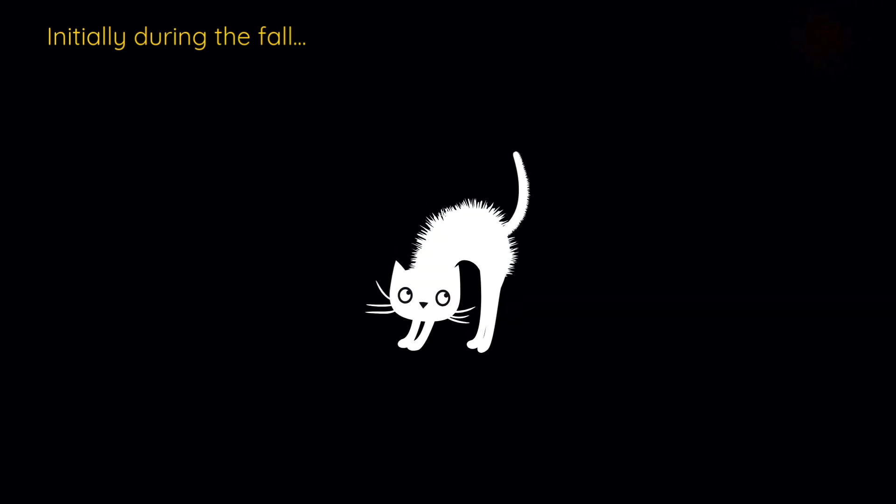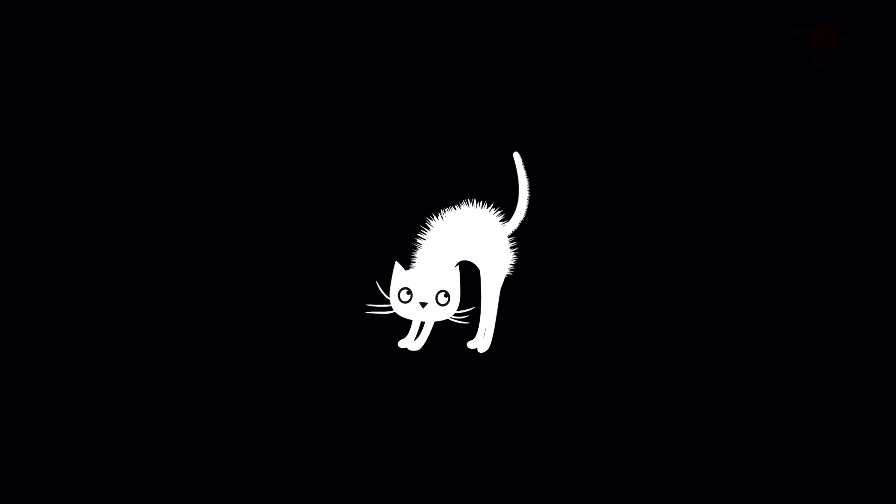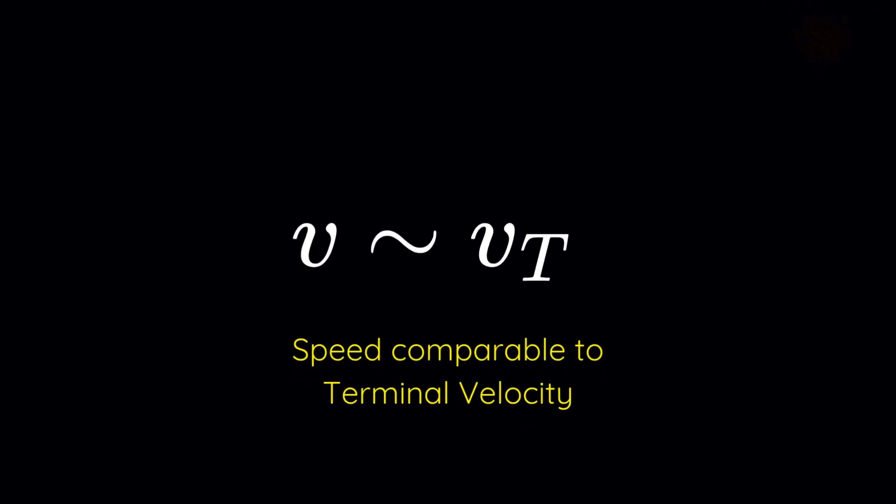When a cat first starts to fall, it's scared. Its body tenses up, legs tucked in, and it's in full fight-or-flight mode. In this position, the cat presents a smaller surface area to the air, meaning it accelerates downwards faster because there is less air drag. But as the fall continues, something interesting happens.